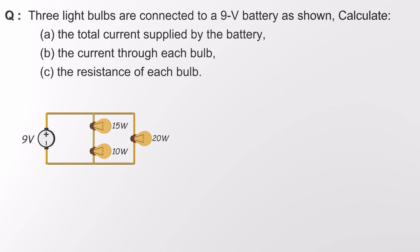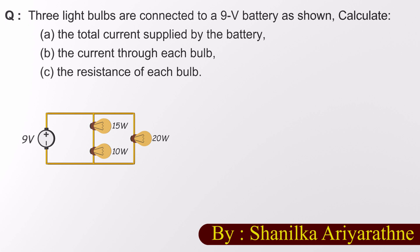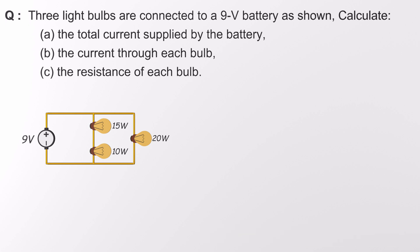Three light bulbs are connected to a 9-volt battery, and while at first glance this might seem like a complex circuit, we can actually break it down with a few key ideas and some trusty formulas.